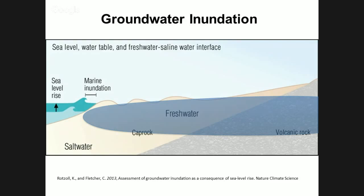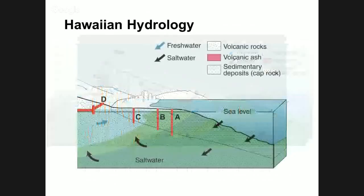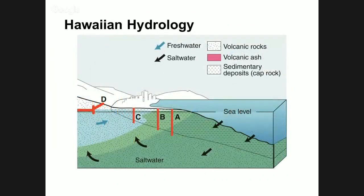The Oahu aquifer is a general lens system. Along the coastline there's a layer called cap rock that is less permeable — it doesn't allow water to flow through as quickly, which allows the lens to build up a little thicker and closer to the surface.